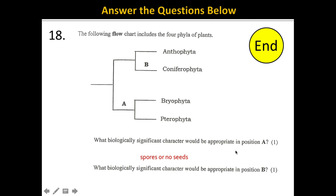In position B, you want to separate coniferophyte from anthophyte. Correct answers include that coniferophyte produce cones, that coniferophyte do not produce fruits, or that coniferophyte do not produce flowers. That is the end of the practice quiz for Unit 9.